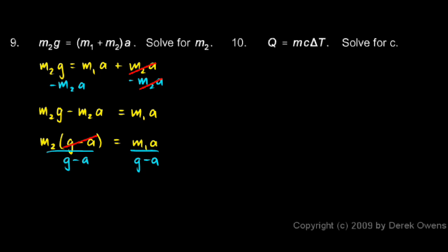And on the left, the g minus a cancels out on the top and bottom. And so that's my answer right there. I'll just write m₂ equals m₁a divided by g minus a.